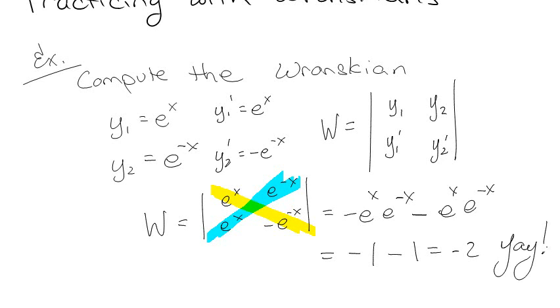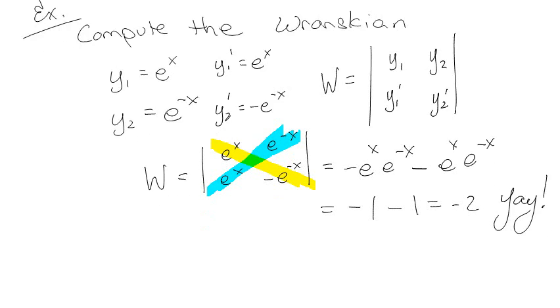The Wronskian is non-zero, which is good. It means that those constants will exist, so this is all going to work out. It's going to be beautiful. So I'm going to give you a couple more, and you can try them out.